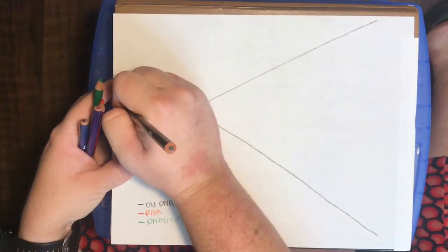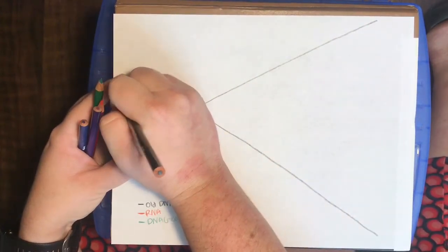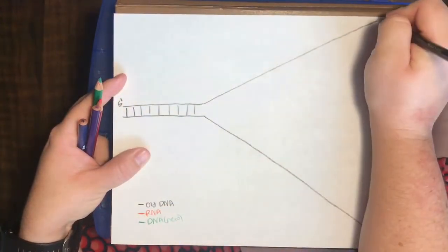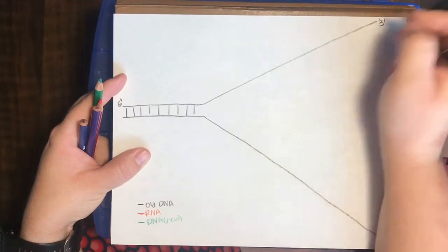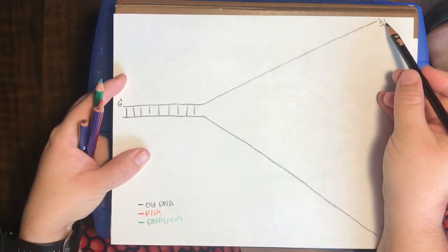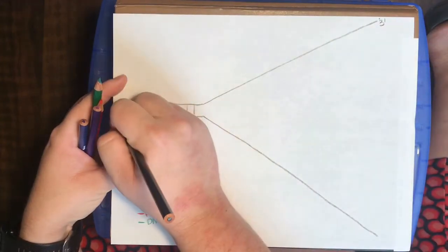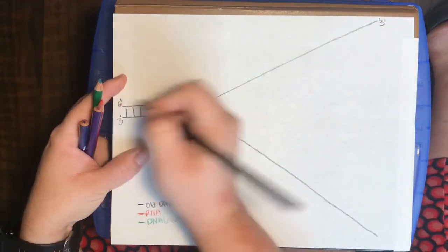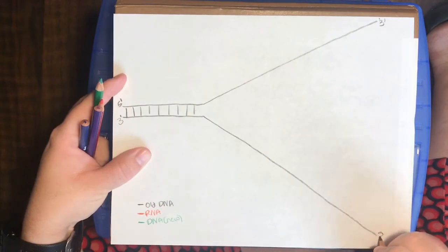So as you know, DNA is an anti-parallel and complementary molecule. So our top strand, we're just going to go ahead and label as 5' to 3'. Because it's anti-parallel, that means that this bottom strand has to be 3' to 5'.